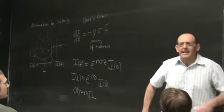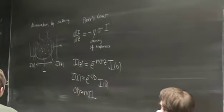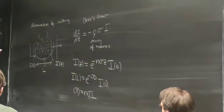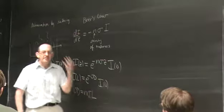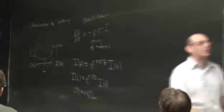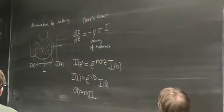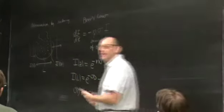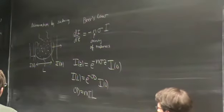But wait — we're not supposed to add intensities. These are waves. We're supposed to add fields and then square to get the power. So how did we get away with that? Should we have gotten away with that?